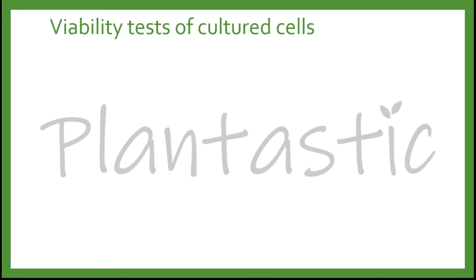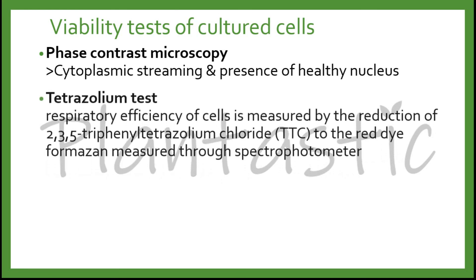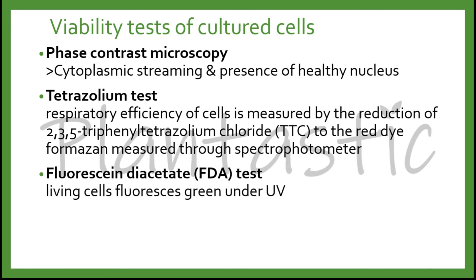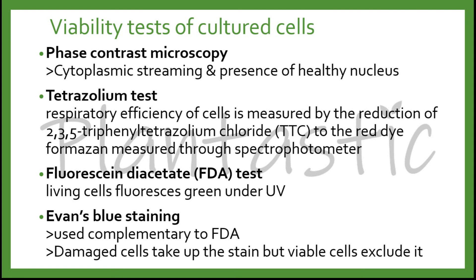After suspension culture has been running for a long period, how do we know whether the cells are still alive? There are viability tests for cultured cells. First, phase contrast microscopy, whereby cytoplasmic streaming and the presence of a healthy nucleus are observed. Second, the tetrazolium test, in which respiratory efficiency of cells is measured by the reduction of 2,3,5-triphenyl tetrazolium chloride (TTC) to the red dye formazan, measured via spectrophotometer. Third, the fluorescein diacetate (FDA) test, where living cells fluoresce green under UV light. The last test is Evans blue staining, used as a complement to FDA — damaged cells take up the stain, but viable cells exclude it.